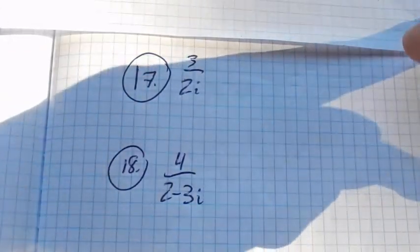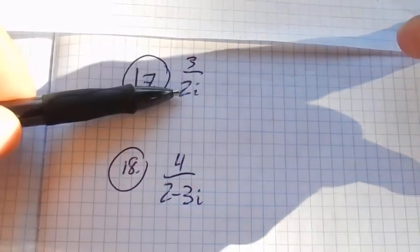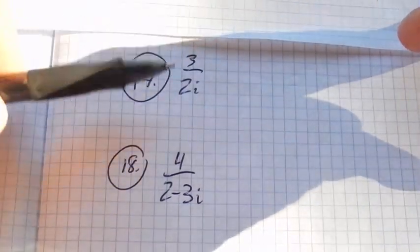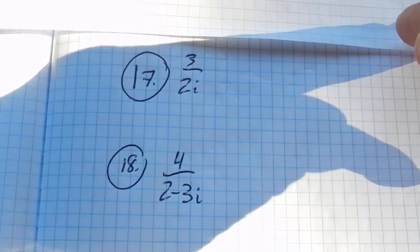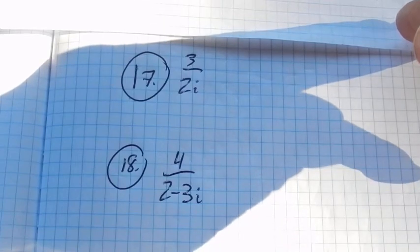And we're supposed to simplify. And when we simplify these complex numbers, we can't leave an i in the denominator. Just like with radicals, it's just not the form we do. That's how we do with division with these.